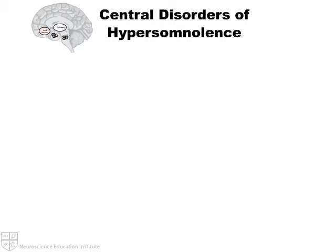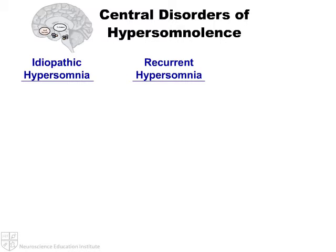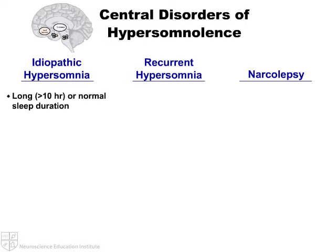Central disorders of hypersomnolence include idiopathic hypersomnia, recurrent hypersomnia, and narcolepsy. Idiopathic hypersomnia is characterized by either long or normal sleep duration with excessive daytime sleepiness and complaints of non-refreshing sleep.